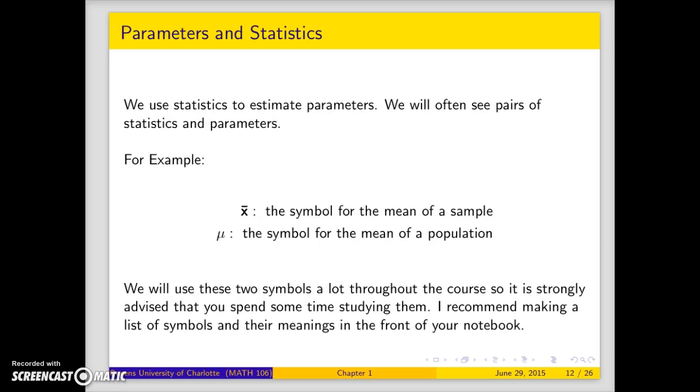Okay, so back to parameters and statistics. Statistics estimate parameters. So, we said earlier that statistics are characteristics of the sample, while parameters are characteristics of the population. And we see these in pairs. For example, this x bar, which is the symbol for the mean of a sample. And this mu, this is the symbol for population mean. This is a statistic parameter pair. Where we have x bar estimated the parameter mu.